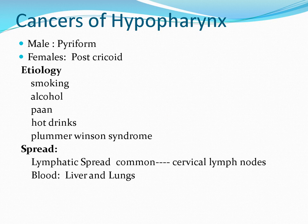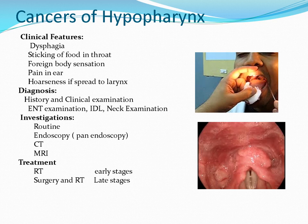Spread of hypopharyngeal cancer is mainly by lymphatic spread to the cervical lymph nodes, and by blood spread. In history, the patient will have dysphagia, sticking of food in the throat, foreign body sensation, referred pain in the ear, and hoarseness of voice if the tumor has spread to the vocal cords.